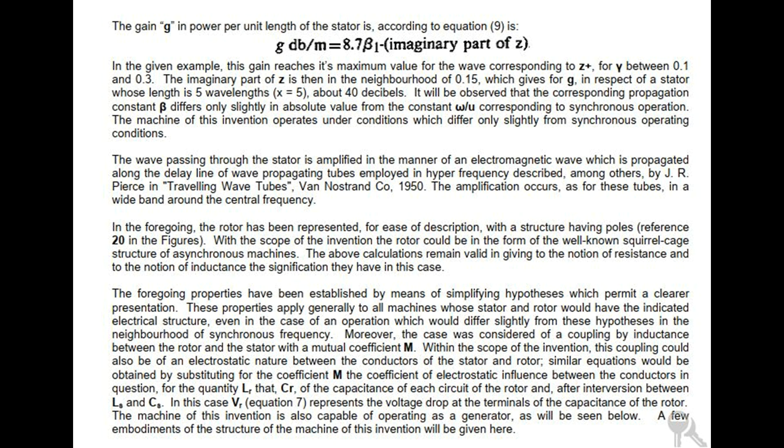Moreover, the case was considered of a coupling by inductance between the rotor and the stator with a mutual coefficient M. Within the scope of the invention, this coupling could also be of an electrostatic nature between the conductors of the stator and rotor. Similar equations would be obtained by substituting for the coefficient M the coefficient of electrostatic influence between the conductors in question, for the quantity LR that of CR, the capacitance of each circuit of the rotor, and after interversion between LS and CS. In this case VR, equation 7, represents the voltage drop at the terminals of the capacitance of the rotor. The machine of this invention is also capable of operating as a generator, as will be seen below.